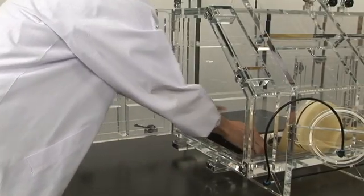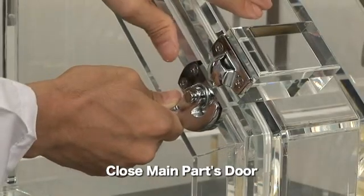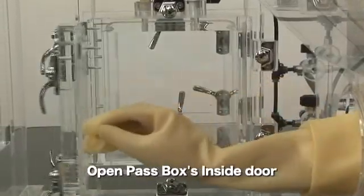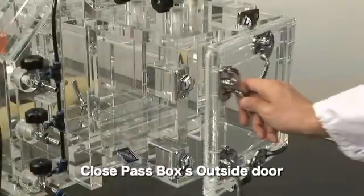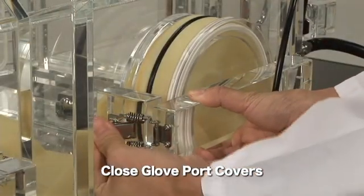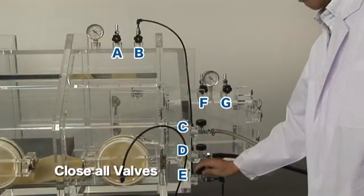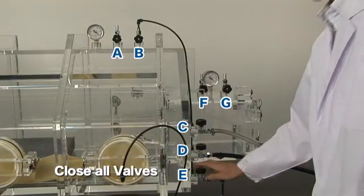Insert items from the left side door and seal the box in these steps. Close all valves from A to G.